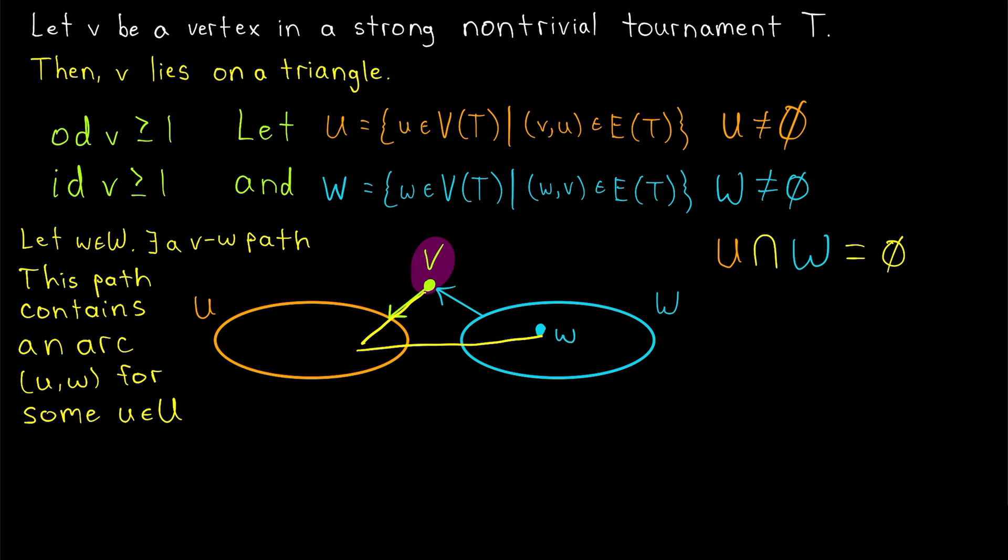v is not adjacent to any of the vertices in W. So if we start at v, in order to get into the set W, at some point, there's going to have to be an arc from a vertex in U to that vertex in W. So we know there exists a vw path, but since v isn't adjacent to any vertices in the set W, that path needs to contain an arc uw for some u in the set U. And so maybe we put that vertex right there. That's the vertex little u from which we're able to get into the set W. Again, we couldn't get to w directly from v, so we must have come through some vertex in U. There must be an arc uw. And now, do you see our triangle?